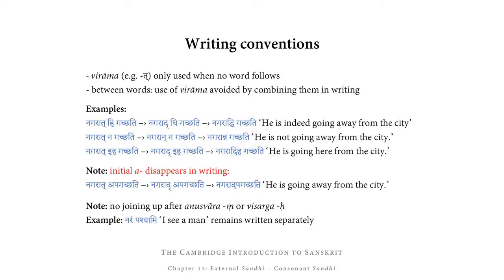The whole thing becomes even more tricky with words beginning with a short a, because a short a after a consonant is not written at all. For example, 'Nagarāt agacchati' — 'he goes away from the city' — gives Nagarādagacchati through Sandhi, and when the two words are joined in writing to avoid the virāma, you get Nagarādagacchati. If you see this in a text, you can probably recognize Nagarād as Nagarāt, but it is very easy to misread the next part as pagacchati, which is not a word. You need to remember that there is an unwritten a in there and split it as Nagarāt + agacchati.